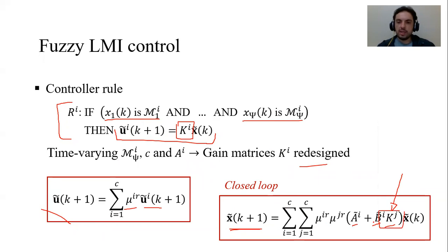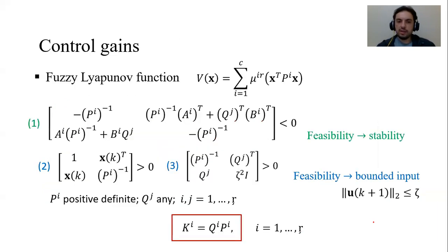We should give a method to obtain K, and K is obtained by this equation. It depends on K^i and K^ij, which are obtained from the solution of these LMIs.